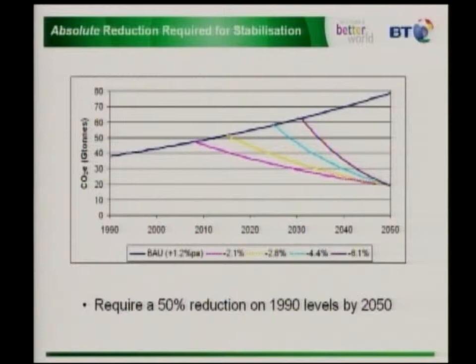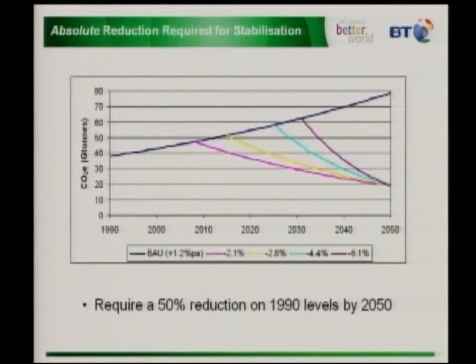The generally accepted scientific consensus is that we need to reduce that by half of the 1990 level — to 20 gigatons of carbon emissions — in order to achieve a reasonable chance at climate stabilization. For people who want the numbers, that's 450 parts per million, a two degrees centigrade rise. We need to halve on the 1990 levels, or 25% of what will happen if we take no action.